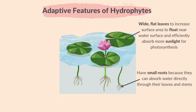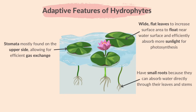Hydrophytes have small roots because they can absorb water directly through their leaves and stems. The stomata, or tiny openings on their leaves, are mostly found on the upper side, allowing for efficient gas exchange.